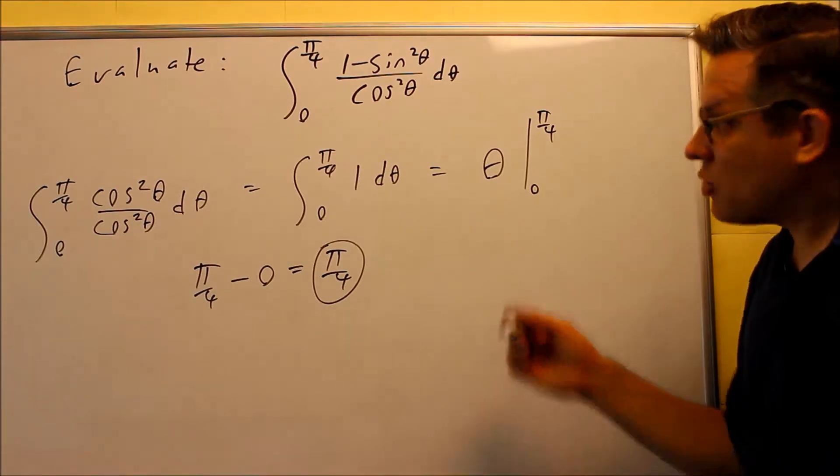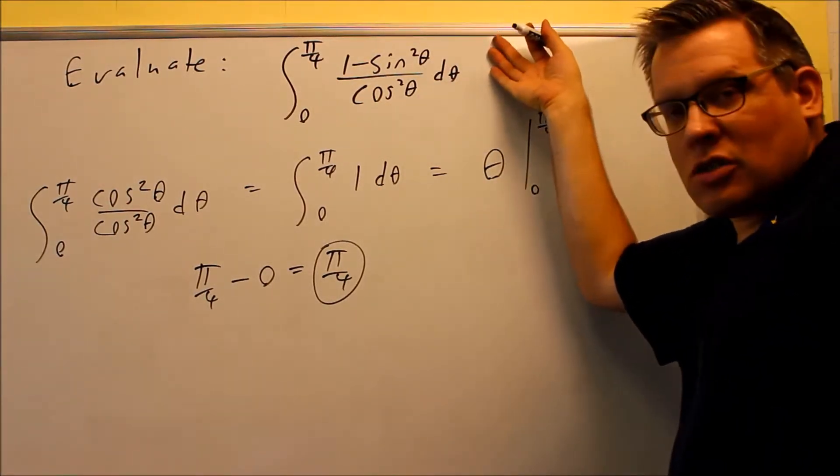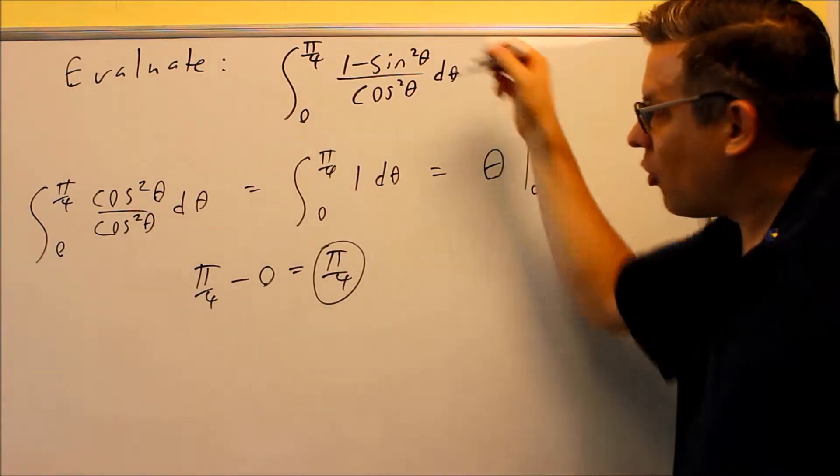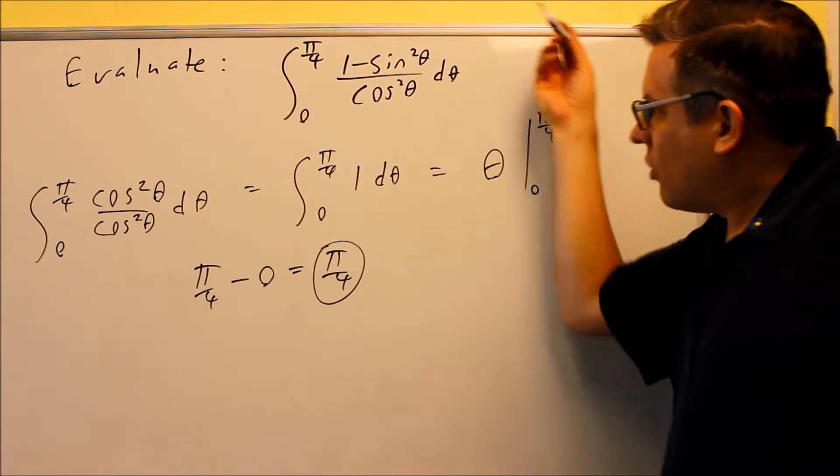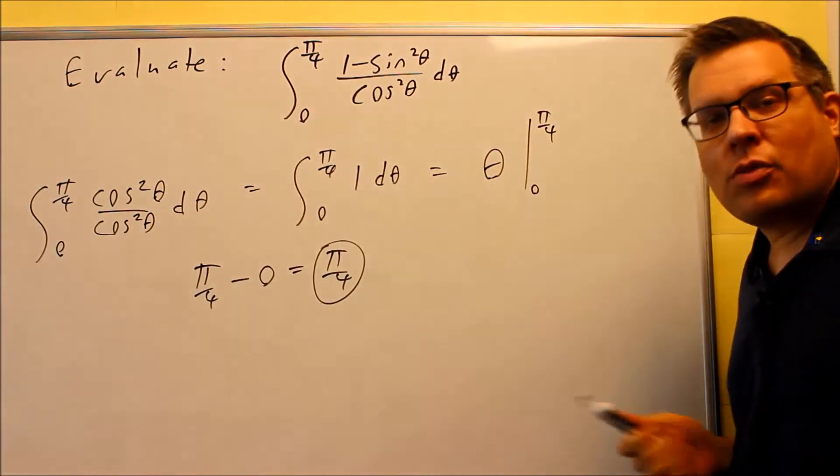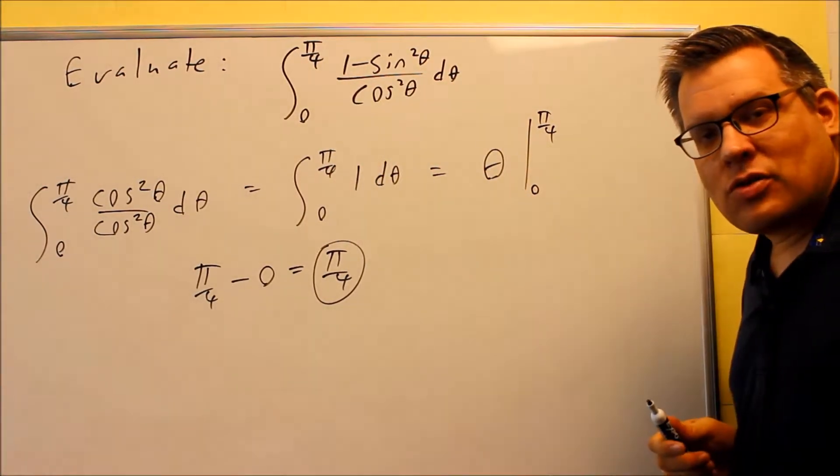So with these trig ones, sometimes make sure you check to see if you can put an identity in or not. Because if you can put an identity in, it might make the problem a whole lot easier. By doing that, the whole thing just canceled out to 1, and that was very easy to integrate. It would be easier than trying to go through and dividing all that by doing secant squareds and tangent squareds.